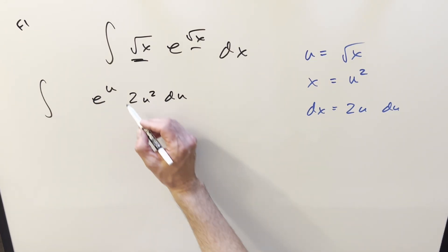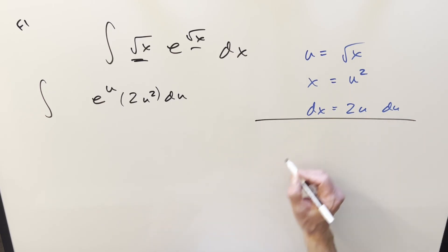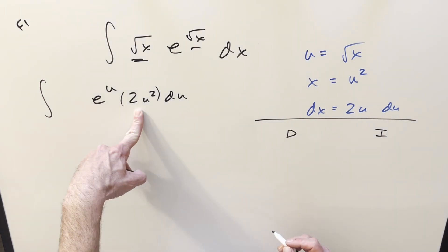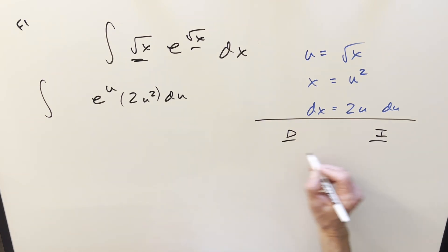We'll do this using the DI method over here. What I want to do, let's differentiate this because we can differentiate it all the way to 0. So we're going to differentiate 2u squared, integrate e to the u. Let's differentiate a whole bunch of times. So we're going to get, let's see, it's going to be 4u. Then the derivative of that is going to be just a 4, and that's going to be a 0.